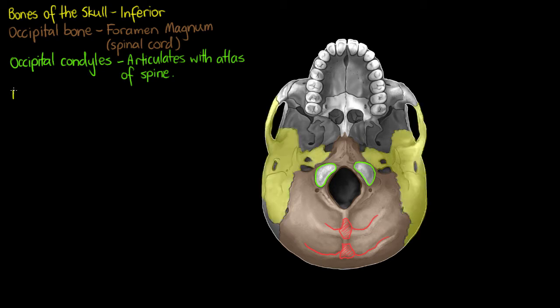The next bone I've just highlighted here is our temporal bone and from this view we can see that it extends a fair way on the inferior surface of the skull.